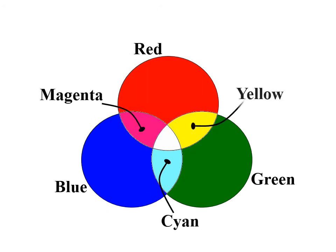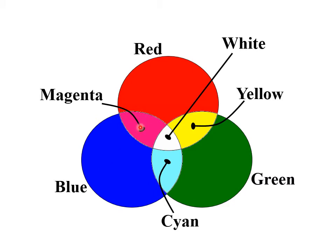When we mix the primary colors of light: red and green mixed together produce yellow, green and blue mixed together produce cyan, and red and blue mixed together give magenta. All three mixed together give white.